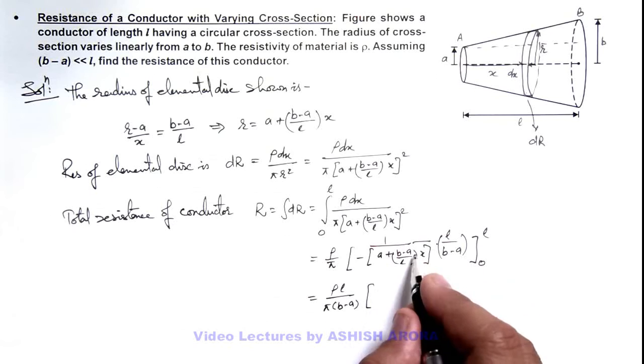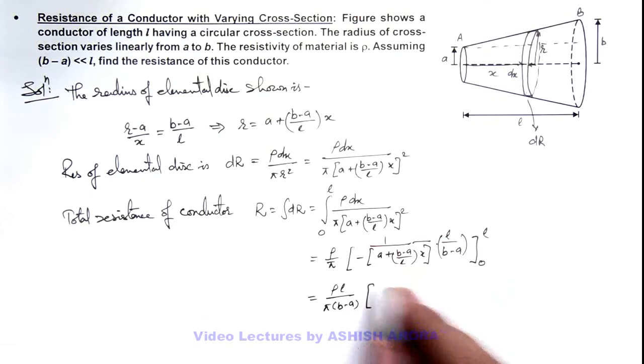When you substitute zero, this will be minus 1/a, so the negative will become plus. So this will be 1/a minus 1/b.